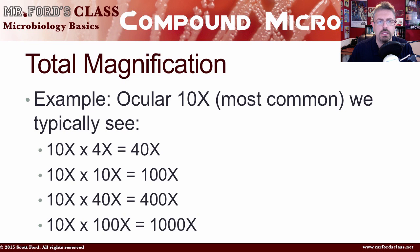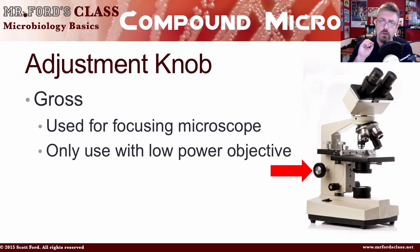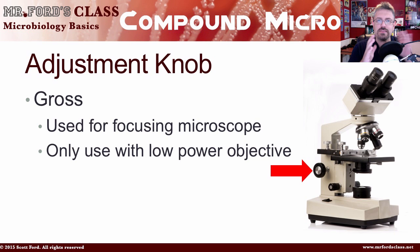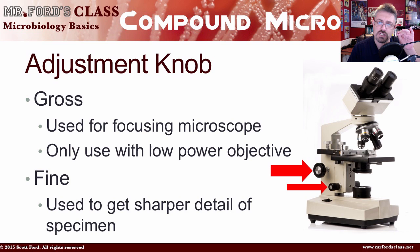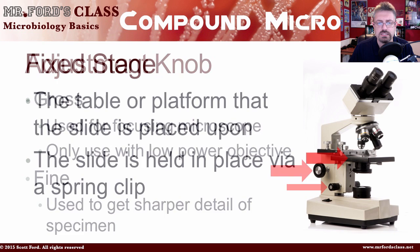The next components are the adjustment knobs — there are two. The gross adjustment knob makes large movements and is used on your lowest power to scan around on the stage. Once you get the specimen into focus and switch to a higher objective, you use the fine adjustment knob, which makes small changes in focusing to get sharper detail. You should not use the gross adjustment knob on high power — that's a no-no.